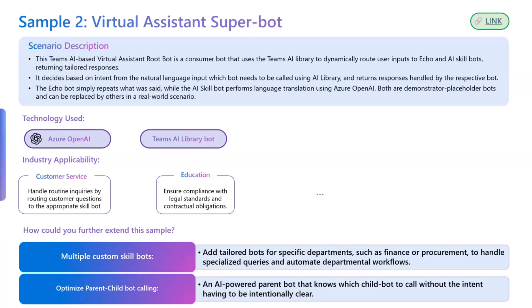Basically, it takes the user input and then it has two skill bots. The first skill bot is the echo bot — it will just echo whatever you give it as input. The other one is an AI skill bot, which is a translator bot — a translation service that makes calls to Azure OpenAI and will translate whatever input you give it into whatever language you specify. Even if you don't actually say which bot to use, it figures out which one to call.